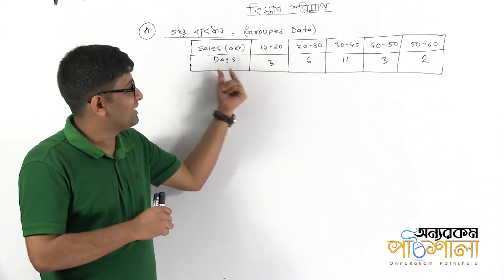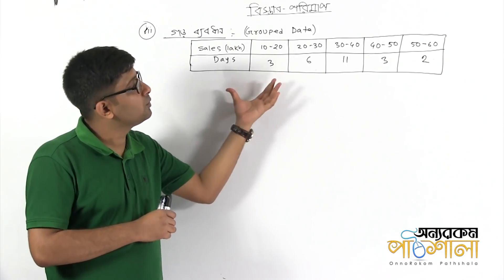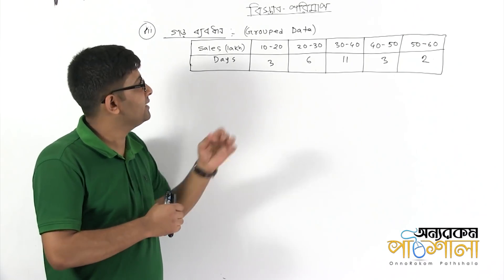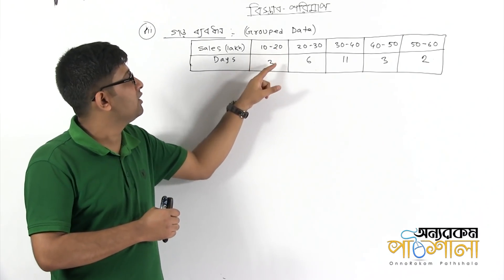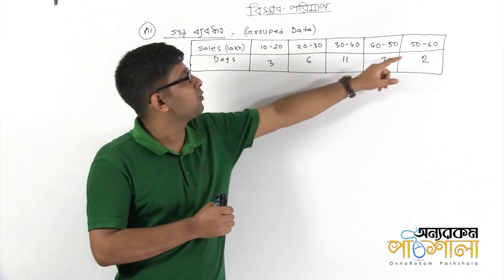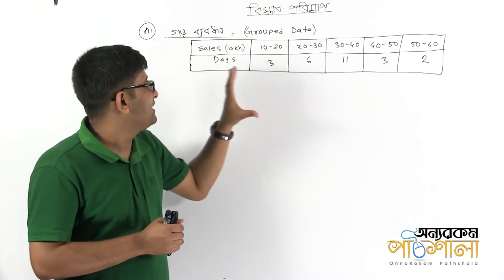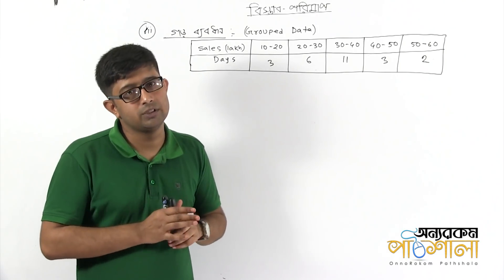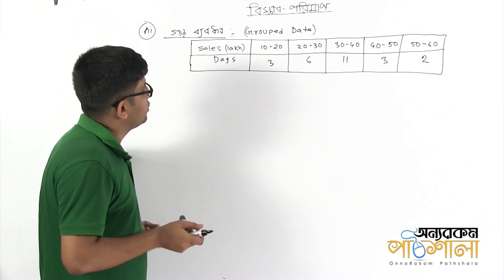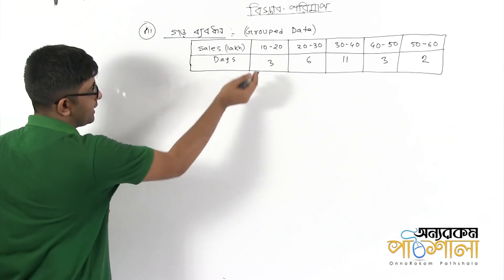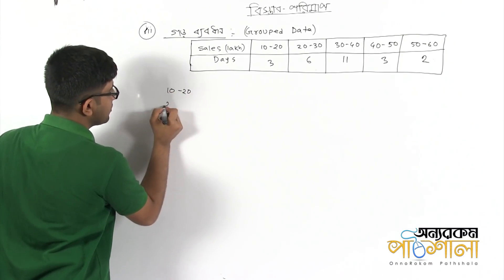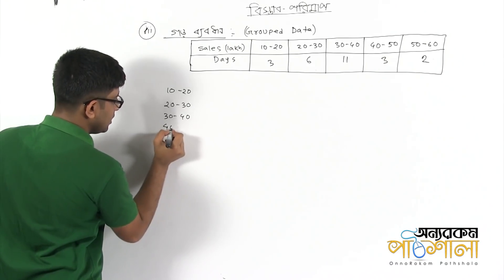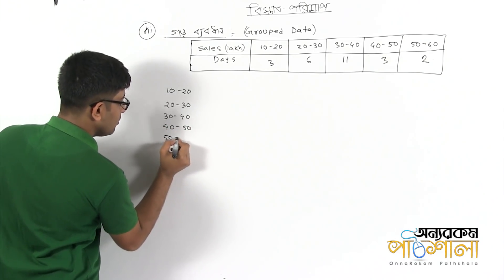What happened here is that we're working with 25 days, because the company had a sales company. We were doing 10-20 lakhs — about 3 days. 20-30 lakhs in the last few days, 5 days. I will write the group data: 10-20, 20-30, with frequencies 14, 14, 15, 15.